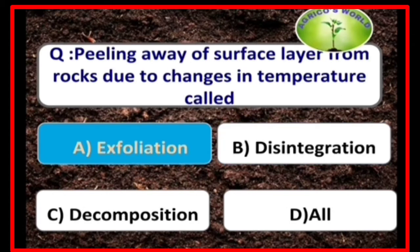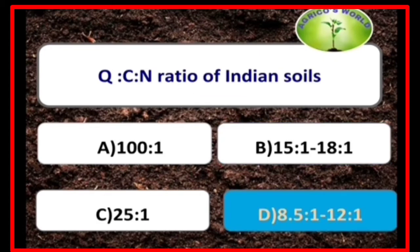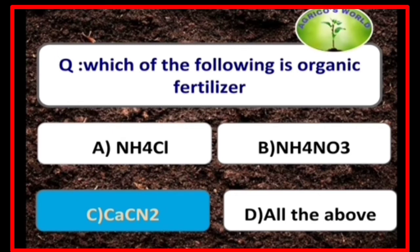Peeling away of the surface layer from rocks due to changes in temperature is called exfoliation. The optimum pH for nitrification is 8.5. The C:N ratio for Indian soils is 8.5:1 to 12:1. Calcium cyanamide is an organic fertilizer.